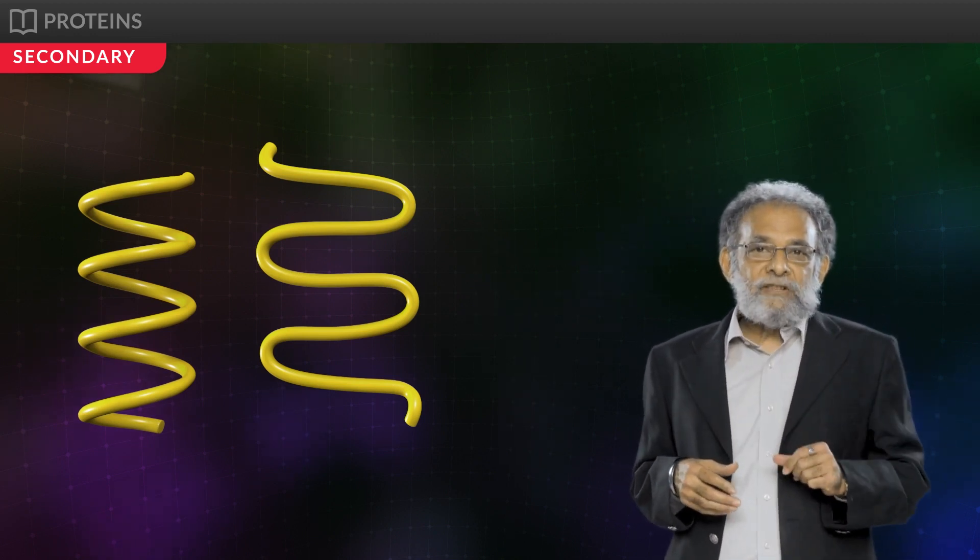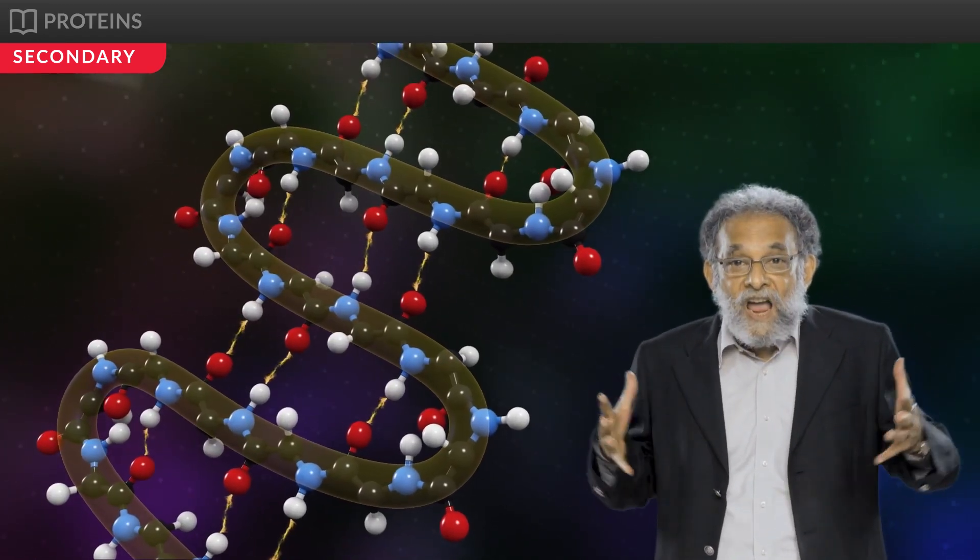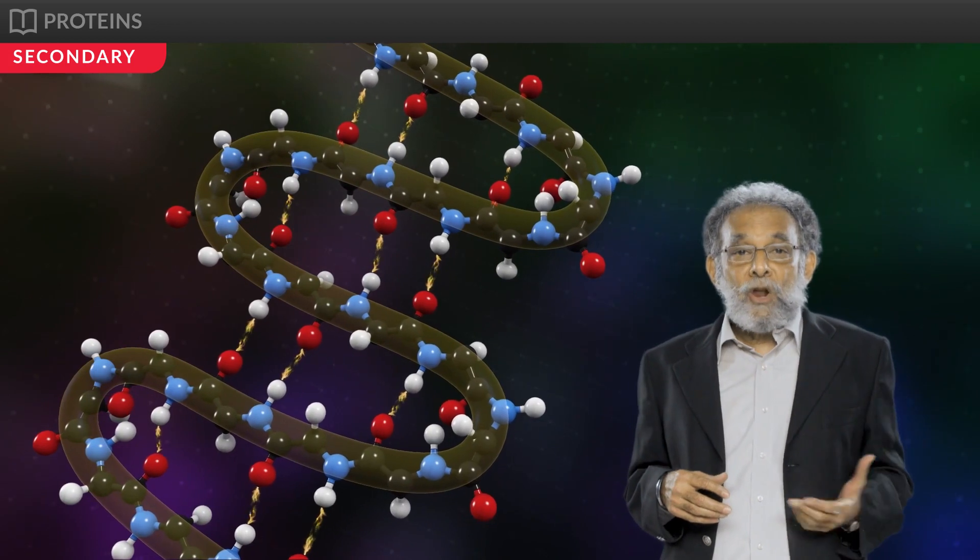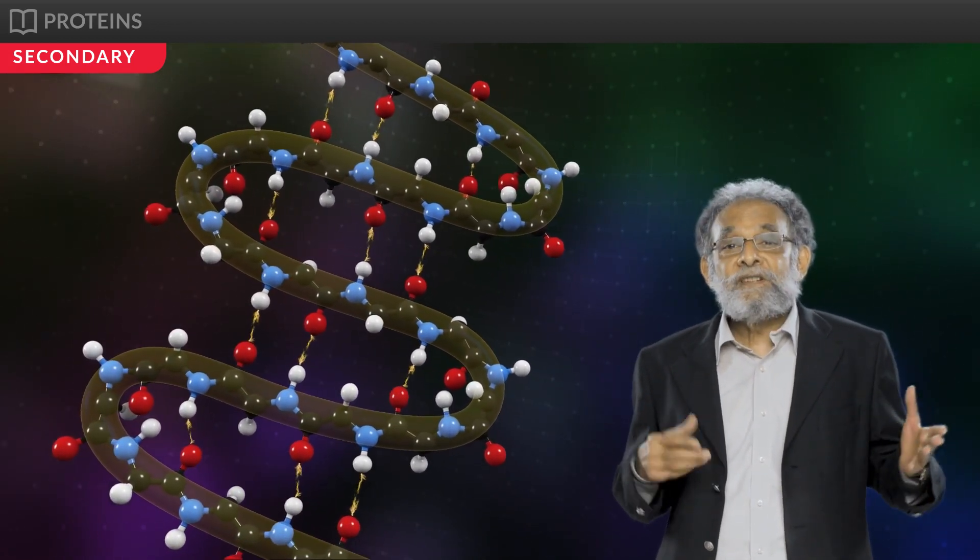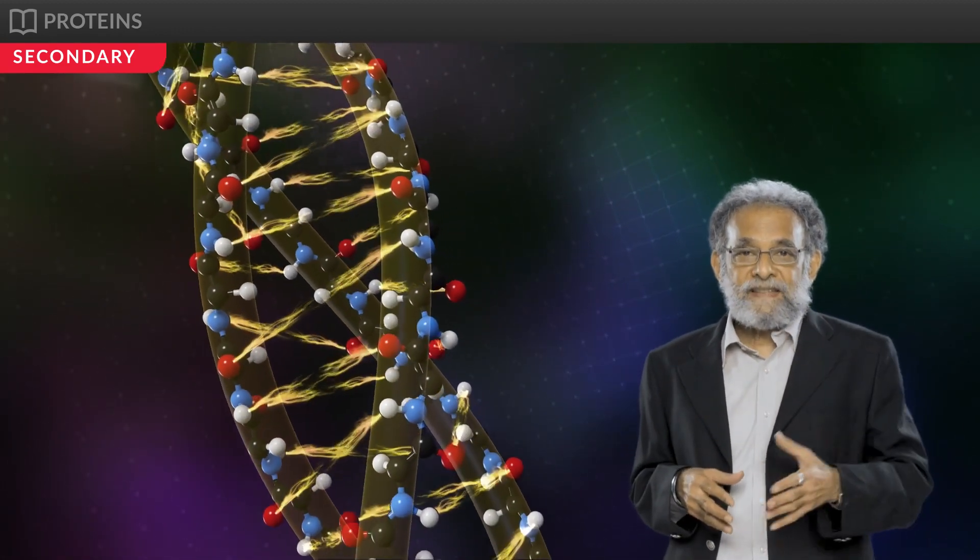In a beta pleated sheet, two or more polypeptide chains are held together by intermolecular hydrogen bonds between different amino acids. Exceptionally, collagen helix has three polypeptide chains, which are strengthened by establishing hydrogen bonds and locking effect of proline and hydroxyplurine amino acids.